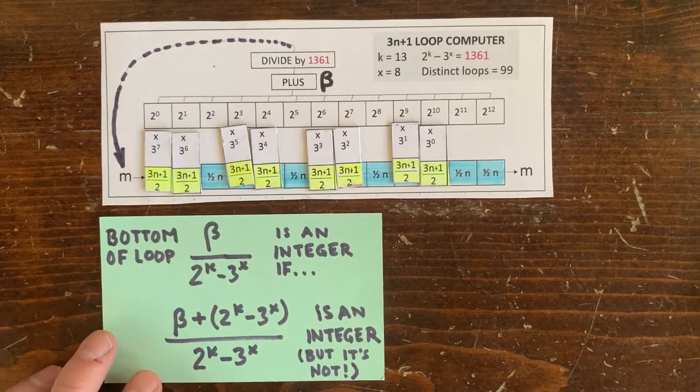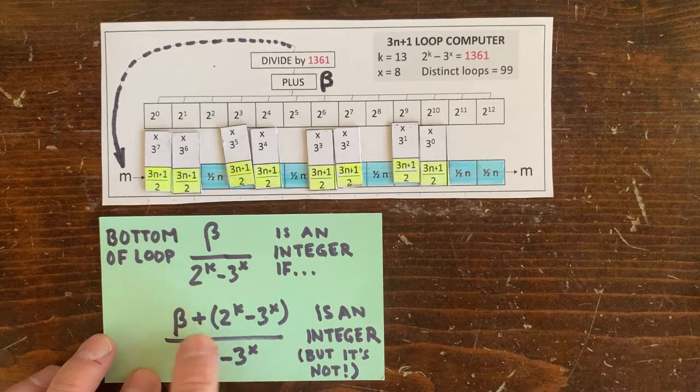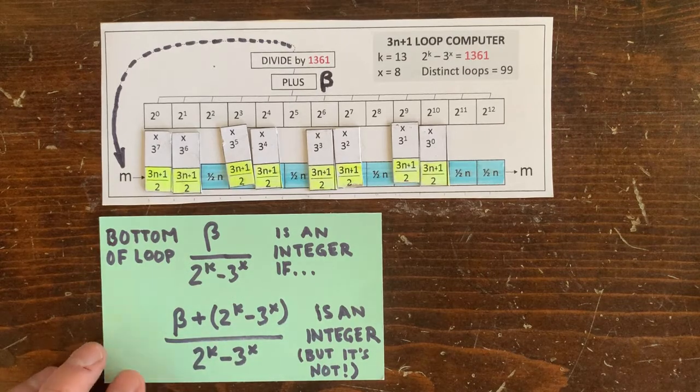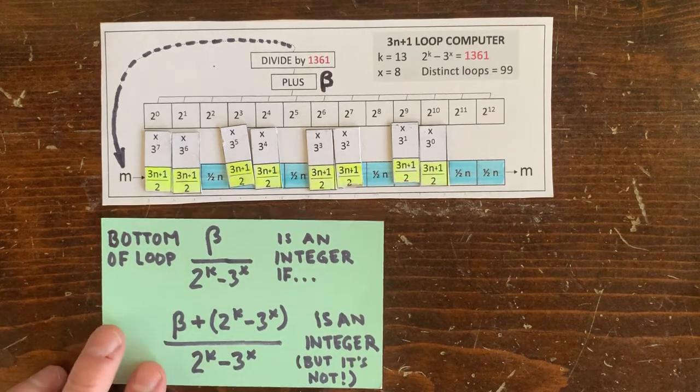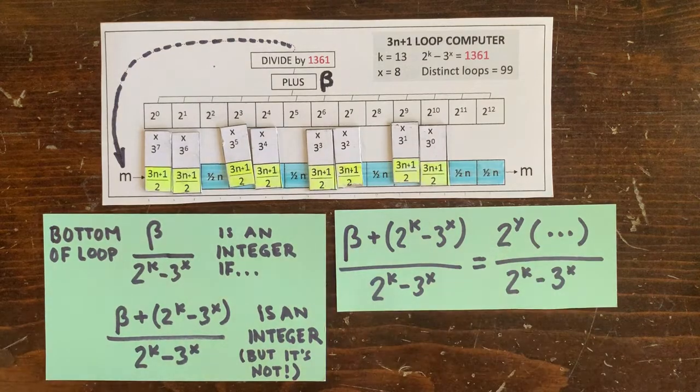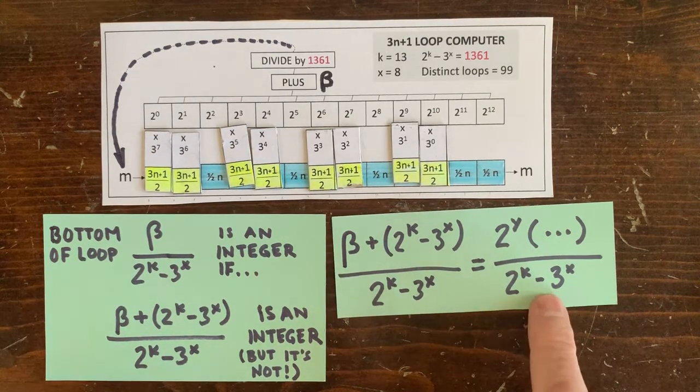Now, one trick was to add 1361 to the numerator, so this still has to be an integer, and then cross off a lot of factors of 2, making this less than 1, so it's not an integer.